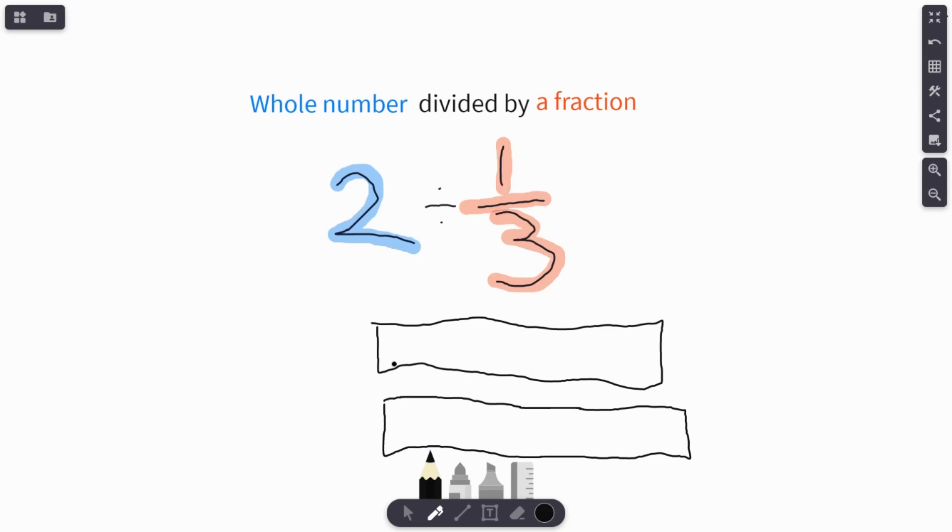And then what we're going to do is just divide each whole into thirds. So if I take two wholes and I divide each one into thirds, how many pieces did I make? And the number of pieces that we made is the answer.